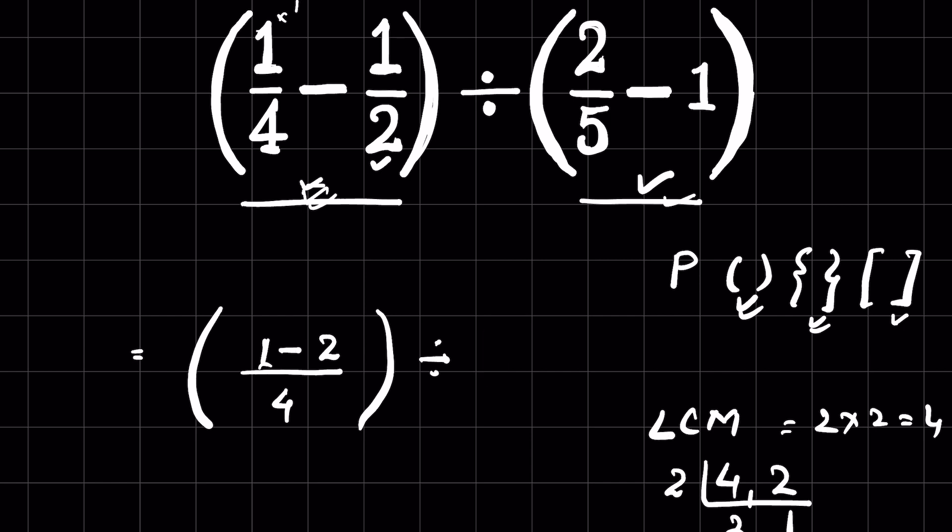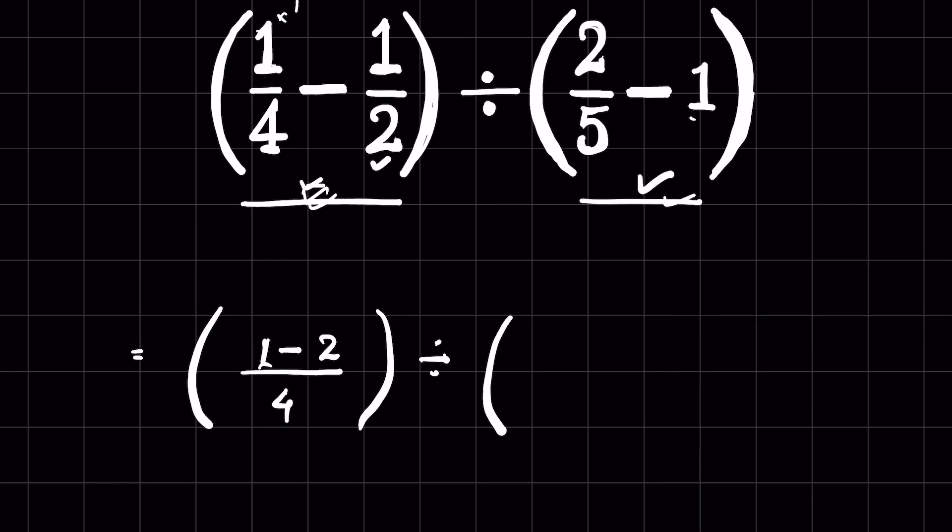Then we solve this operation inside the parenthesis. Again, this is subtraction. Here we have no denominator, so we put 1 in the denominator. It's 2 upon 5 minus 1 upon 1. Take LCM of 5 and 1, which will be 5. 5 divided by 5 is 1, and 1 times 2 is 2, then minus, 5 divided by 1 is 5.